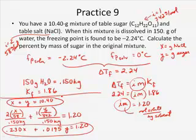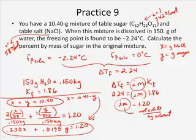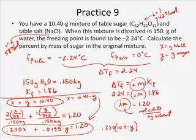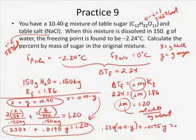So we're wanting, we want the percent by mass of sugar. So y is the one we really want. So we're going to say, rearrange this and say that x is going to equal 10.40 minus y. And I'm going to substitute that in down here. So 0.230 times 10.4 minus y plus 0.0195 times y is equal to 1.20. Separate this out down here.